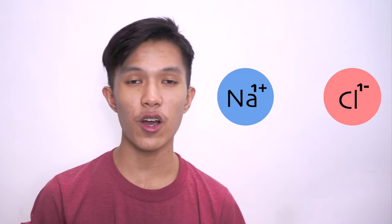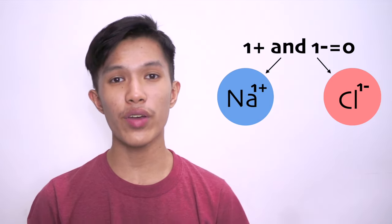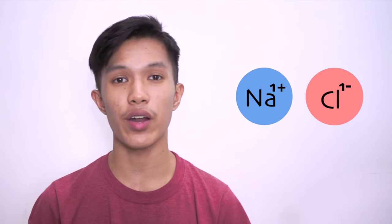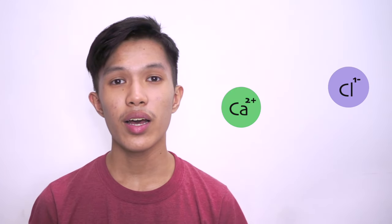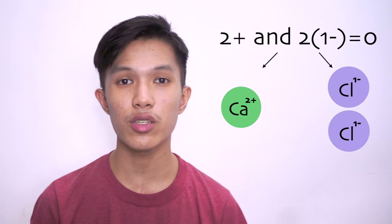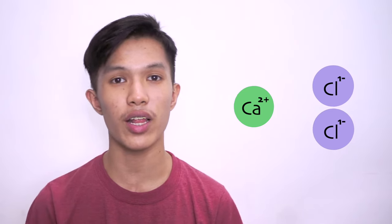Sodium is 1+ and chloride is 1-, so one of each makes the charge of sodium chloride 0 already. Meanwhile, calcium is 2+, so it needs 2 chloride ions to have a neutral compound.